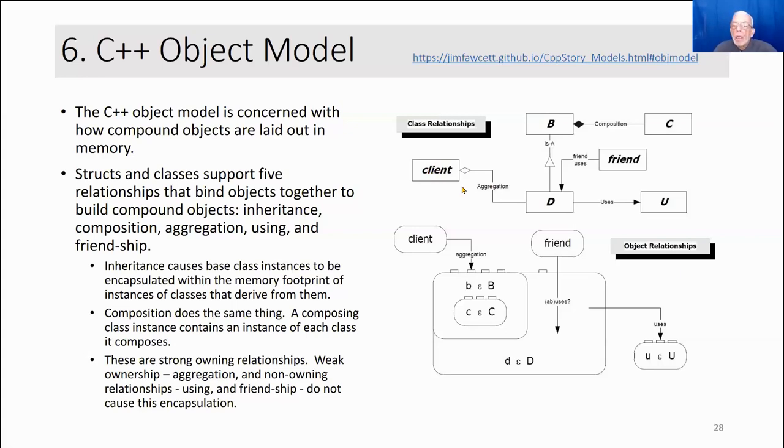This using object has to get passed to D as a reference argument to one of these member functions, maybe a register function or something. The client very typically will pass U to a member function of D so that D has access to it.